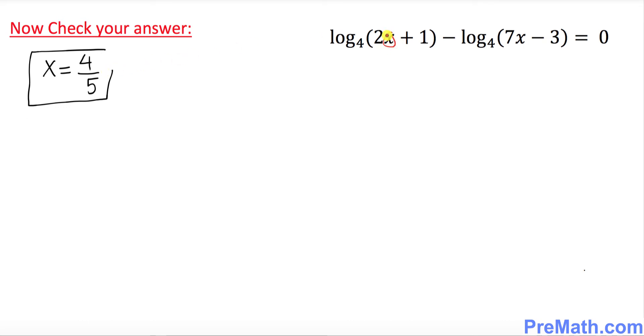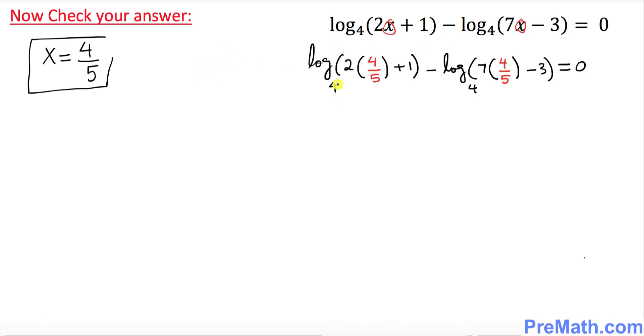That means wherever you see x you replace it by 4 fifths. And here I just plugged it in wherever you see x, I just replace it with 4 fifths on both sides. Let's go ahead and simplify now. So log of base 4 when you multiply 2 times 4 fifths becomes 8 over 5 plus 1, minus log of base 4. This is going to become 28 over 5 minus 3, equal to 0.